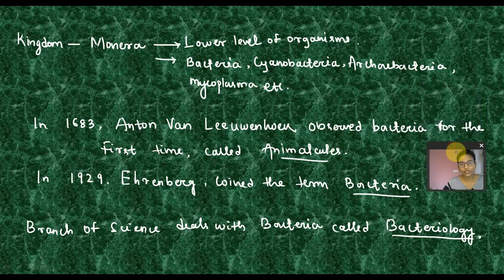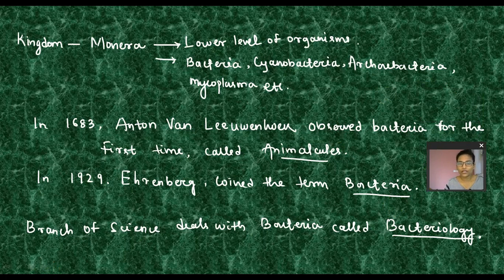When we have five kingdom classification, the total living organisms were classified. The simplified organisms were under-categorized. We have a very simple organism with nuclear content and cytoplasmic content. We have bacteria, cyanobacteria, archibacteria, mycoplasma.